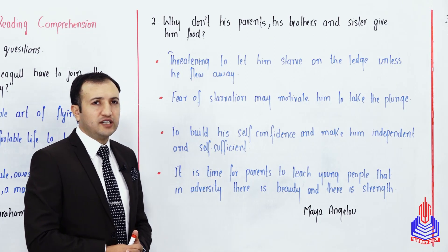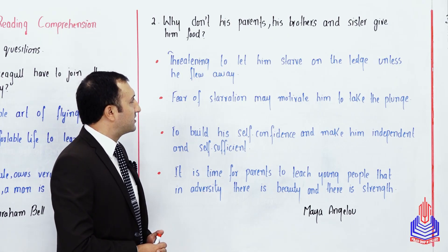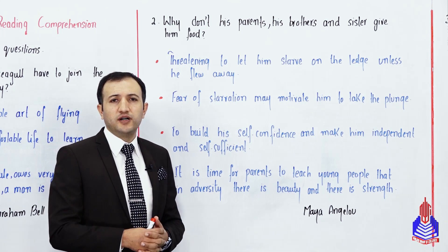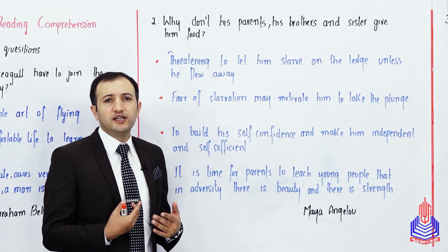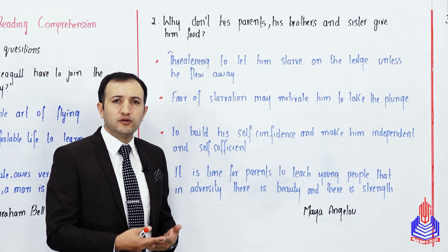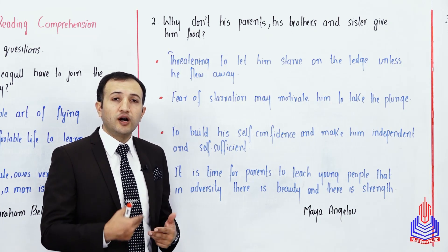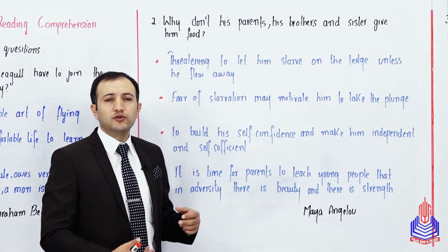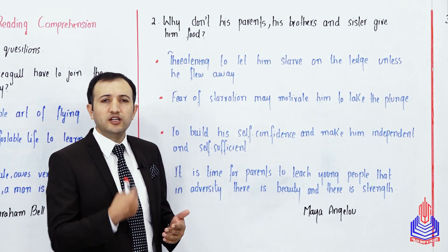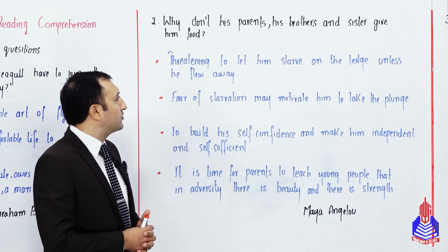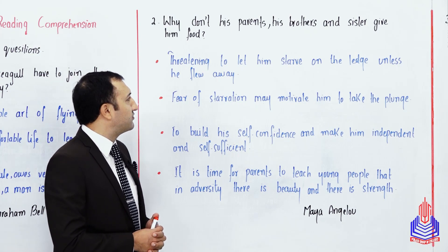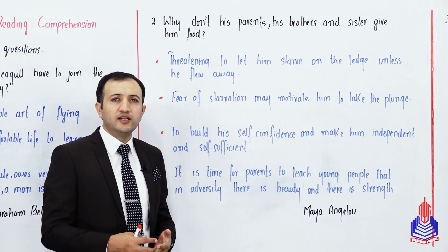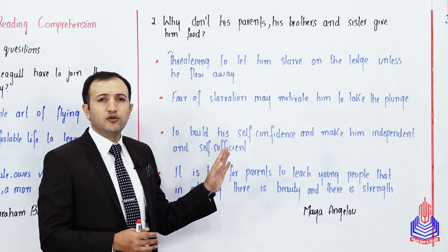Question number 2: why don't his parents, his brothers and sister give him food? This is a recalling question — you will find the answer in your text. First point: they were threatening to let him starve on the ledge unless he flew away. This is the exact line — they do not give him food to threaten him.